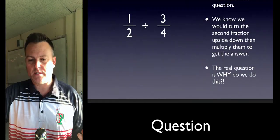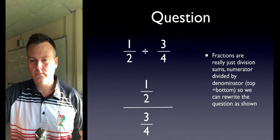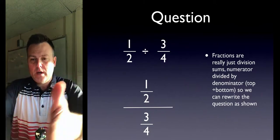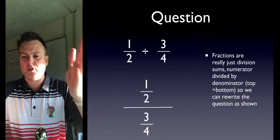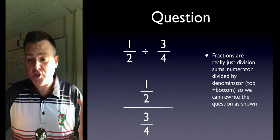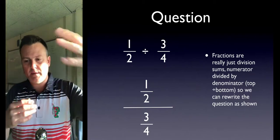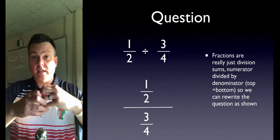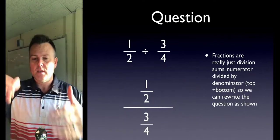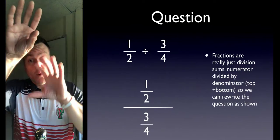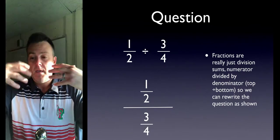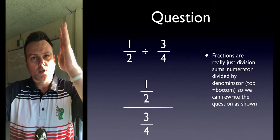Well, here's the answer. One-half divided by three-fourths. Fractions are just division sums—numerator divided by denominator. So they all look like complex fractions. We've got one fraction as the numerator, one fraction as the denominator, and we're going to divide them.